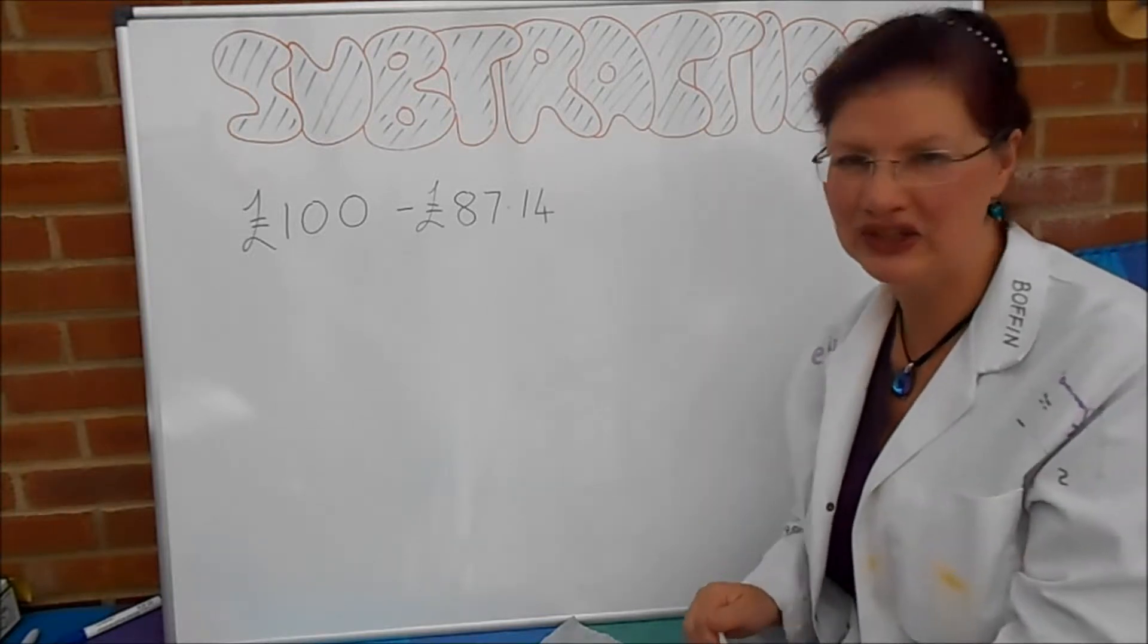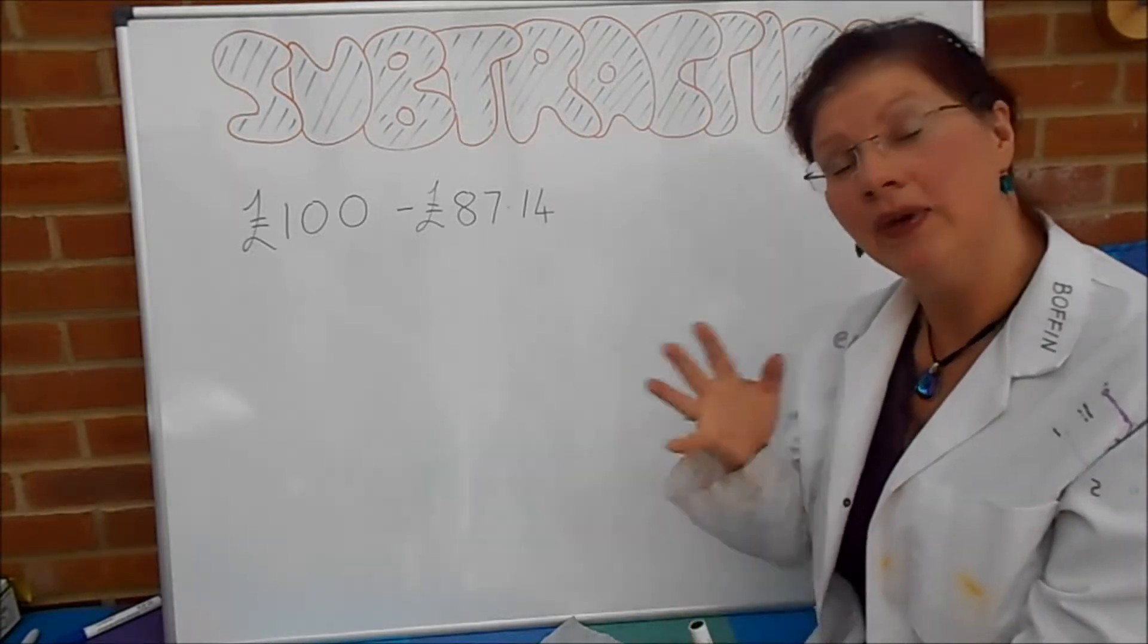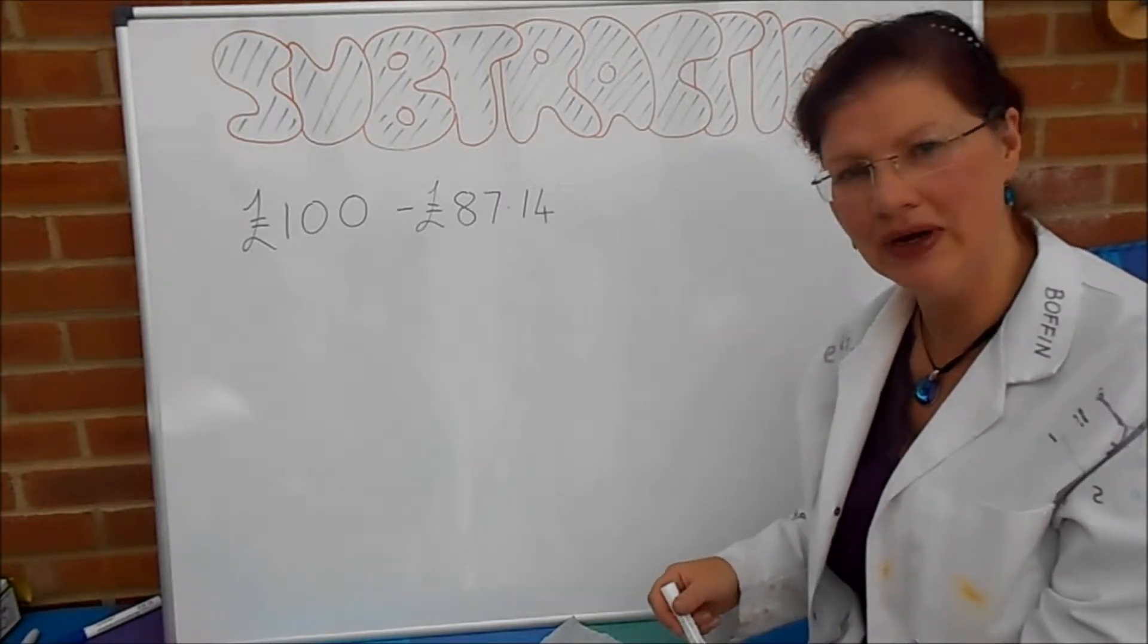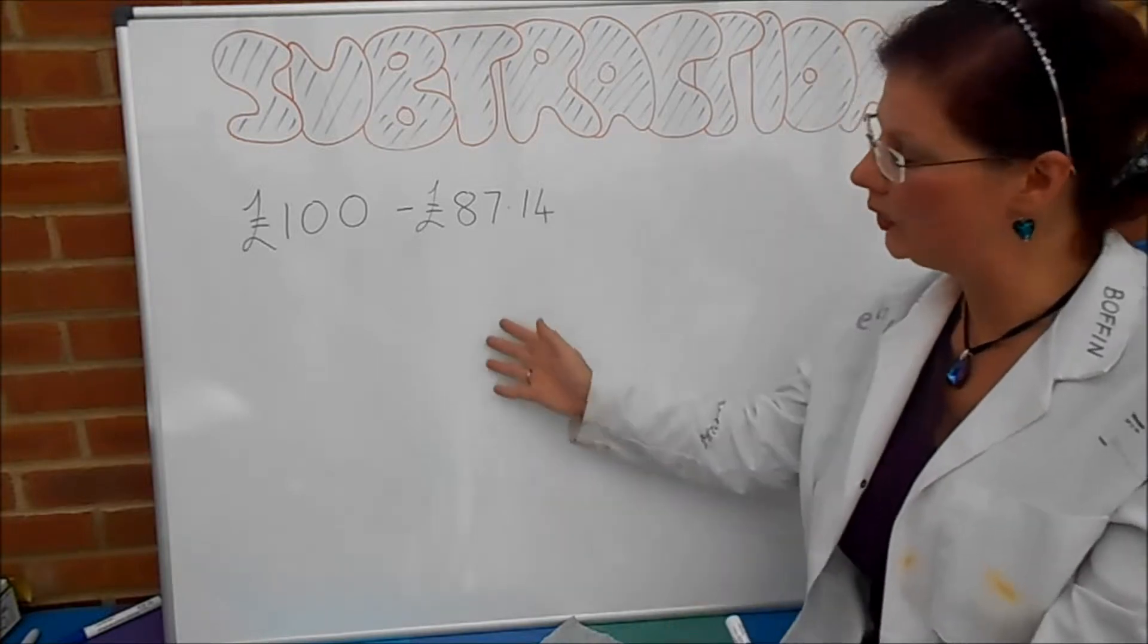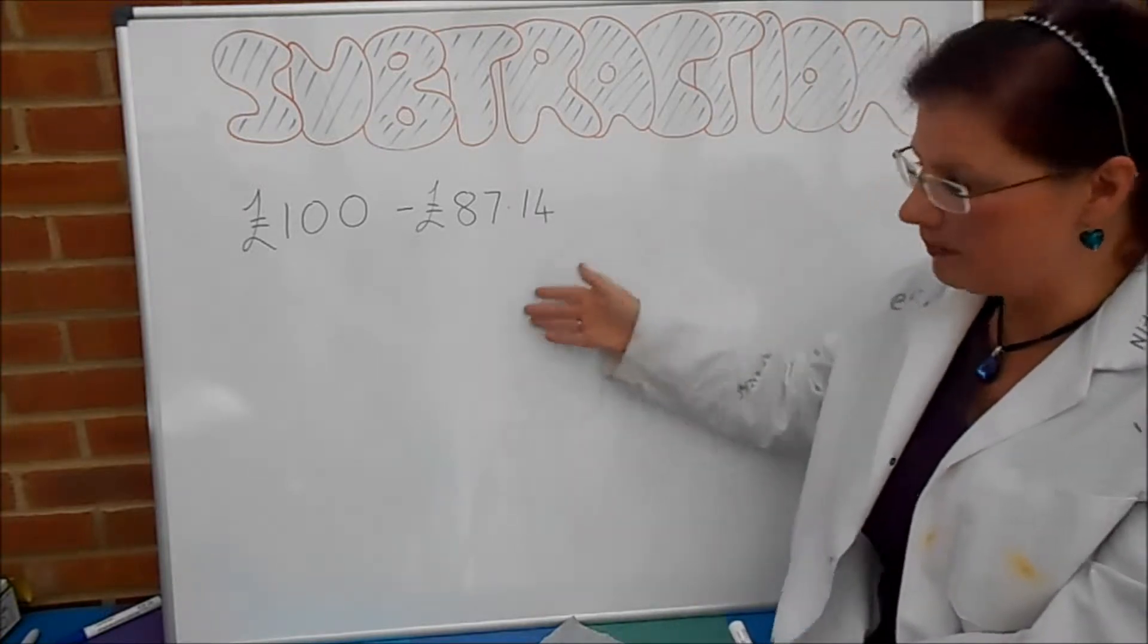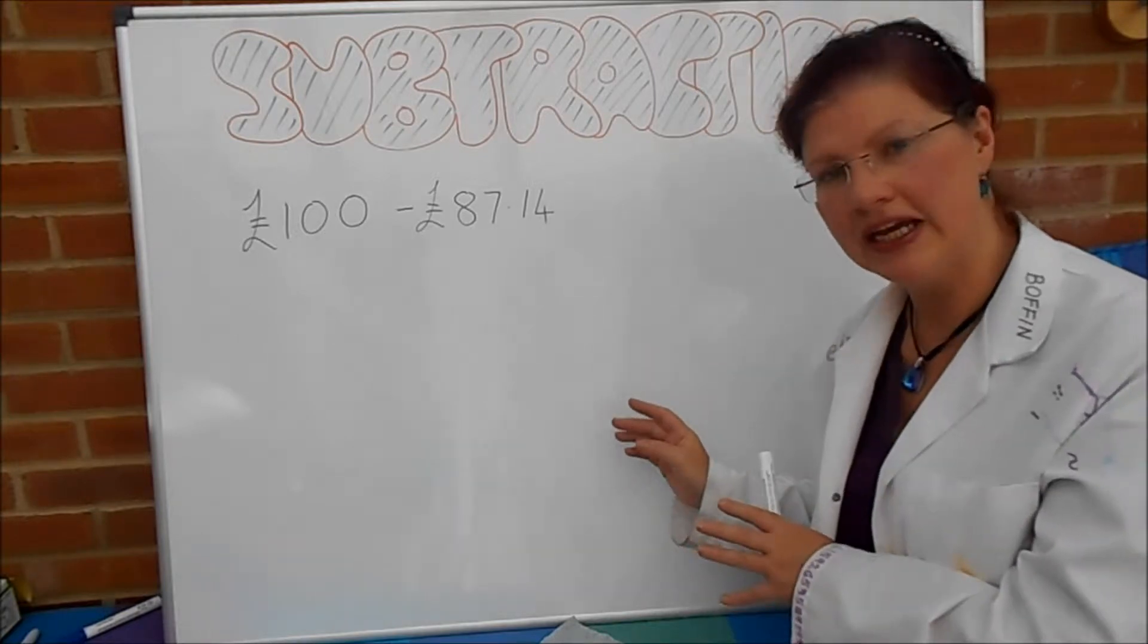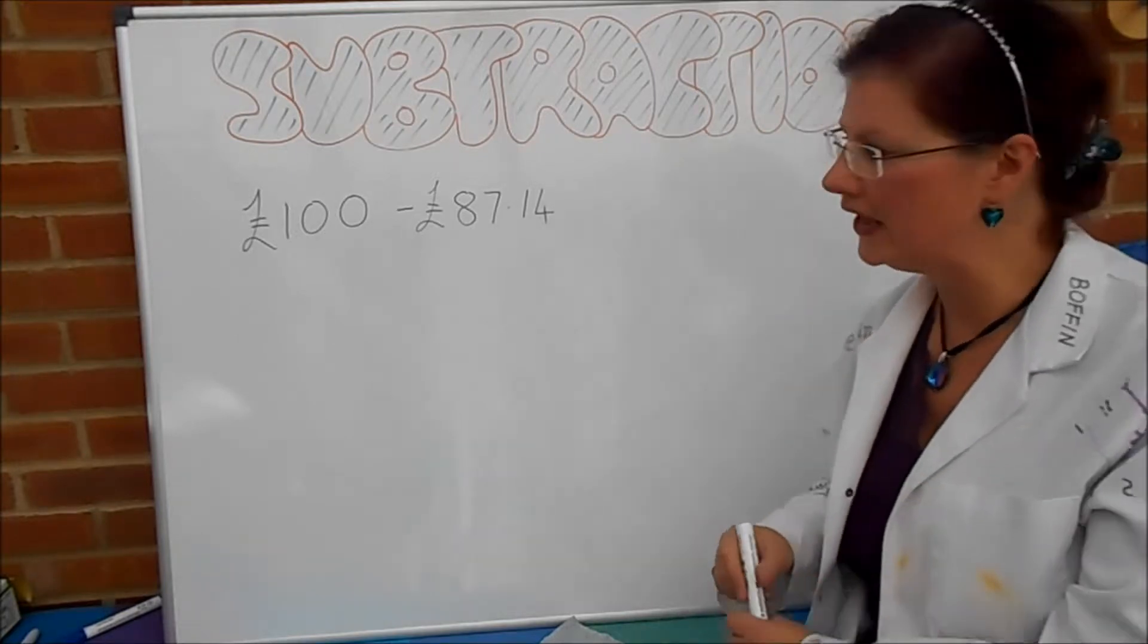Time for a little more subtraction with the Batty Boffin. We're going to be looking at the Shopkeeper method again today. Now, I introduced that in some earlier videos as a way of giving change, and it's a very good method for doing in your head. It's not the column method where we write it all down, which is a great method but it needs writing down. This one is one that you'd do in your head.